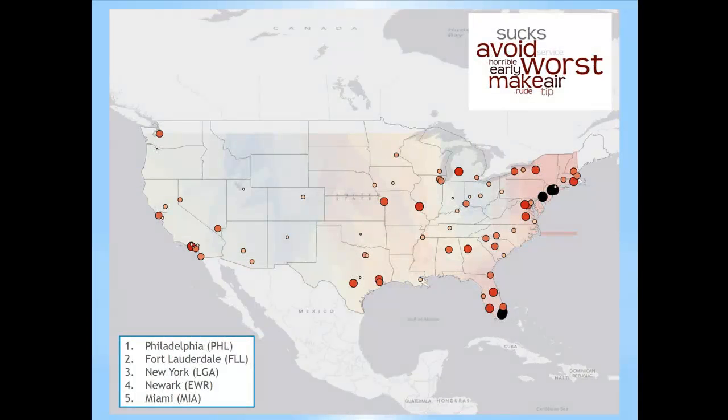If you look at the negative topics, there tends to be a trend toward the East Coast. Philadelphia, Fort Lauderdale, New York, Newark, and Miami appear prominently. The ones shown in black are the airports that have the highest probability of these negative terms appearing in a topic.